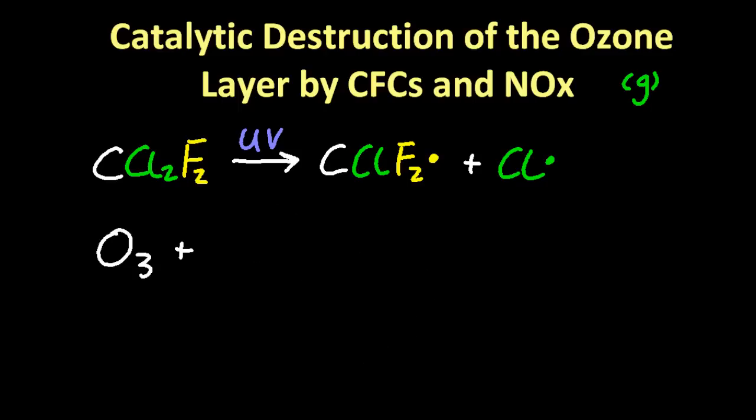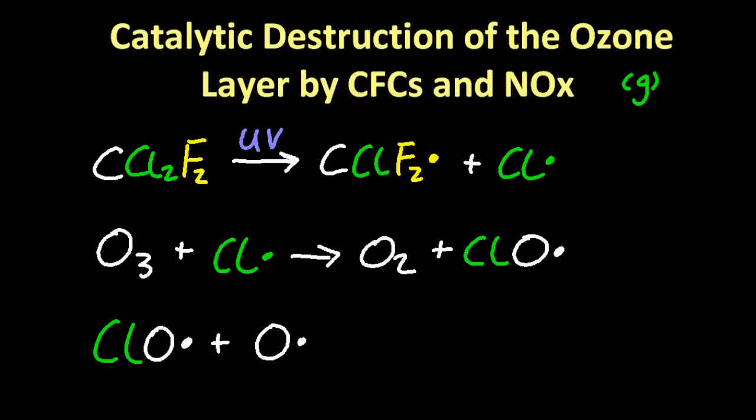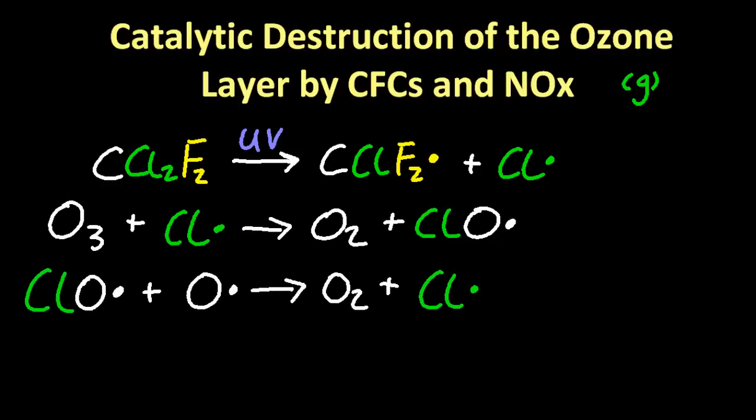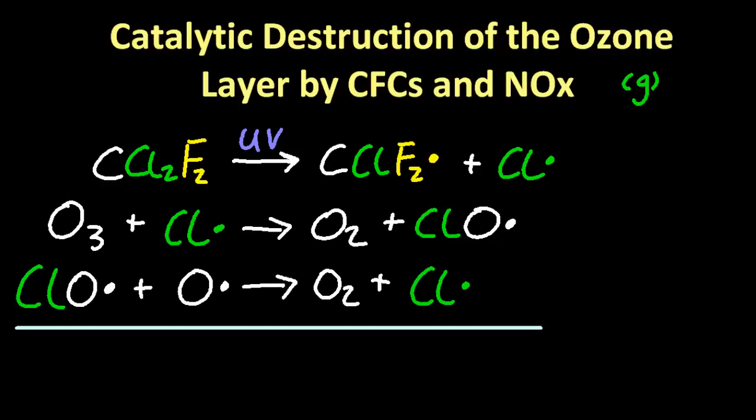Looking at the equations, the chlorine radical destroys an ozone, makes a chlorine monoxide radical that mops up an oxygen radical. Oxygen radical—where did that come from? Well that's a natural part of the environment up in this ozone layer. Just out of curiosity, let's add all these up, cancelling out what's on both sides, see if that gives us any clarity.